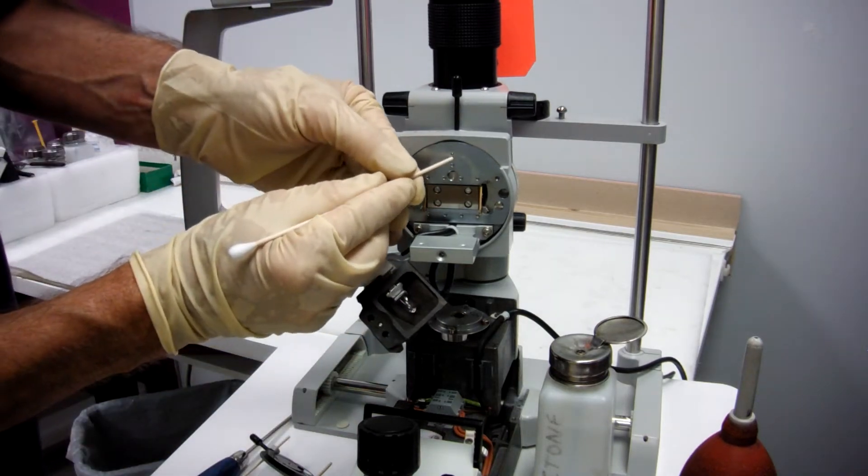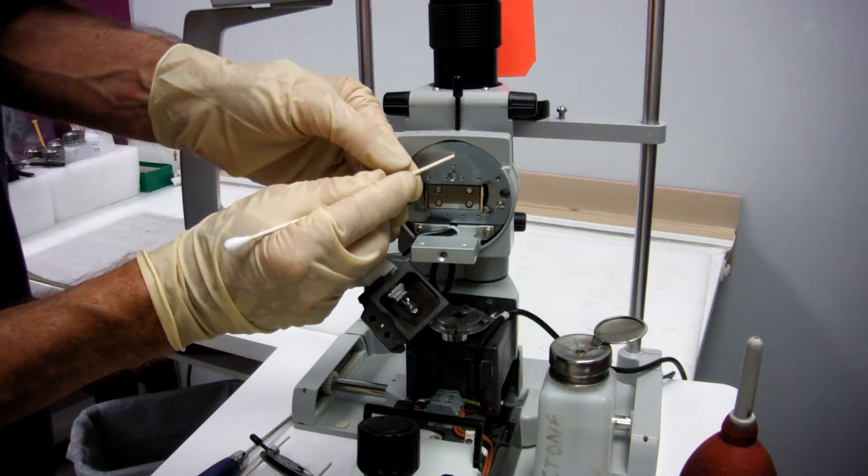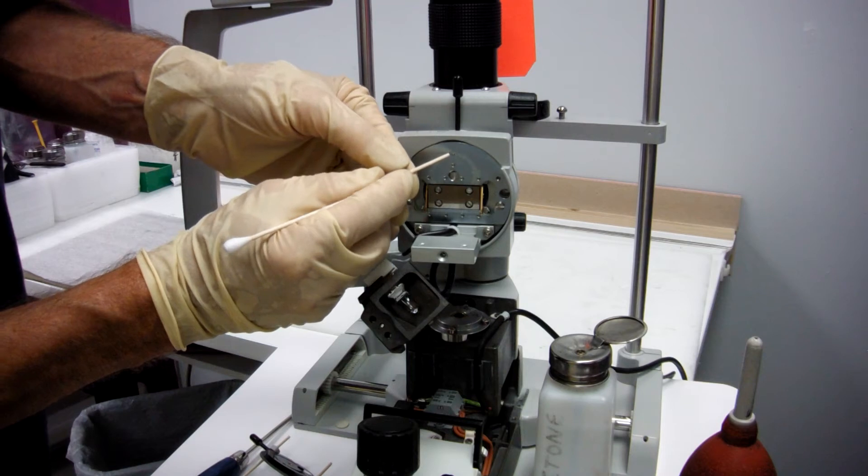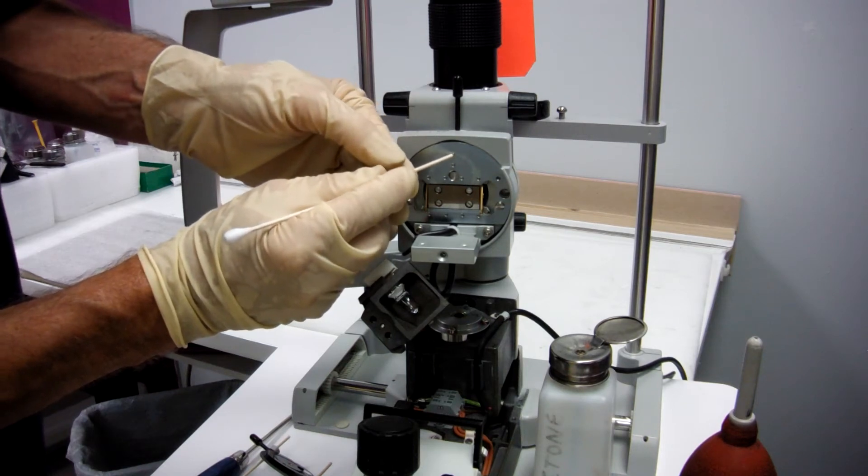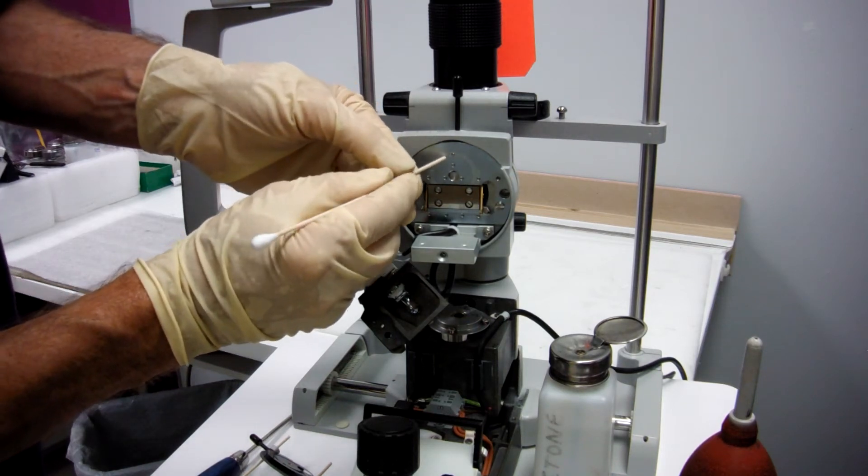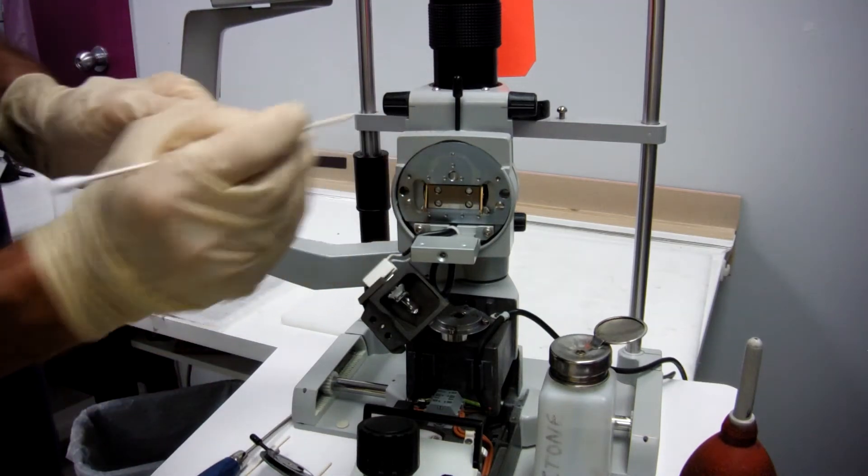Now behind here, this detent, there's a spring and a bearing right there. A small spring and a bearing. It is one and a half millimeters, that little bearing.